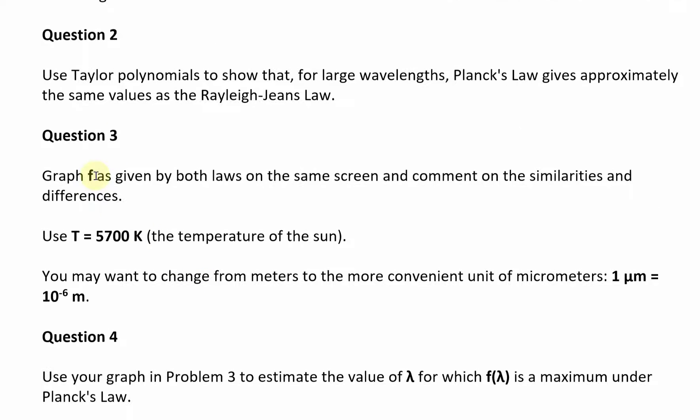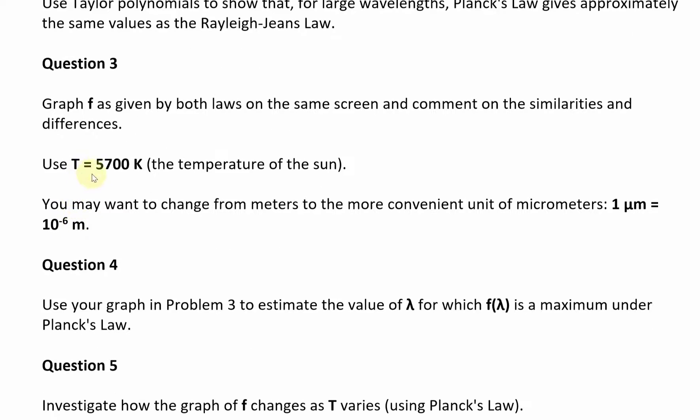Question three states: graph f as given by both laws on the same screen and comment on the similarities and differences. Then it says use T equals 5700 Kelvin, which is the temperature of the sun. You may want to change from meters to the more convenient unit of micrometers, where one micrometer is equal to 10 to the negative 6 meters.